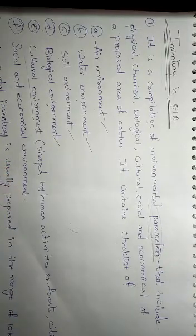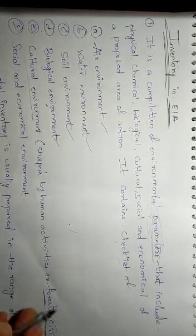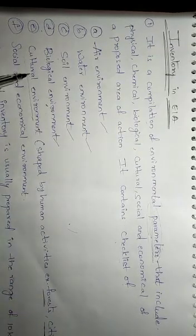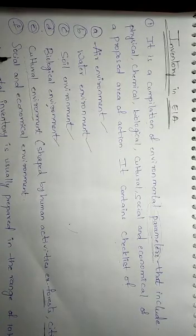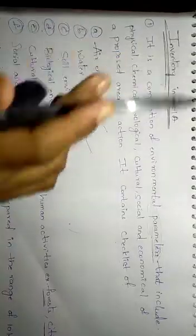That means these are made by the humans. For example, forest, cities. These are made by the humans. These are called as cultural environments. And all these parameters are inventory in EIA.